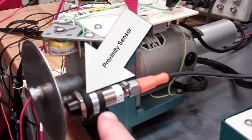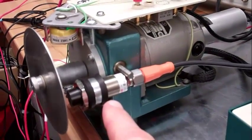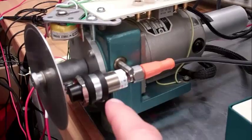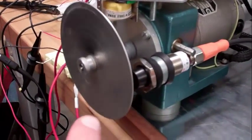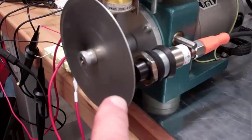Here's the proximity detector that detects the steel rectangular bar that's rotating on the back of the aluminum disk.